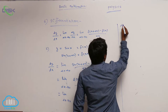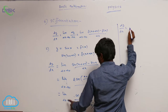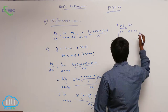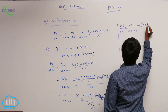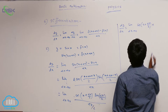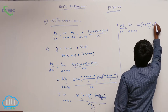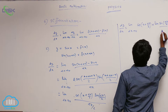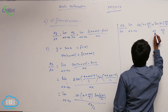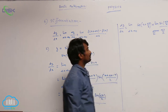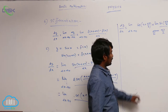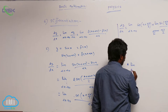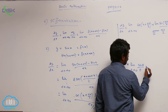dy by dx is equal to limit delta x tends to 0, cos of (x plus delta x by 2), into — again writing the limit — limit of sin(delta x/2) divided by (delta x/2), where delta x tends to 0 or delta x by 2 tends to 0. One important formula you have to know: limit theta tends to 0 of sin theta by theta is equal to 1.